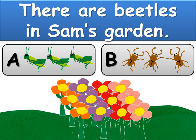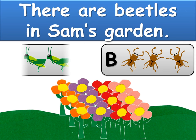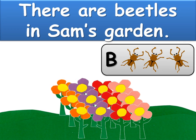There are beetles in Sam's garden. Is the answer A or B? The answer is B.